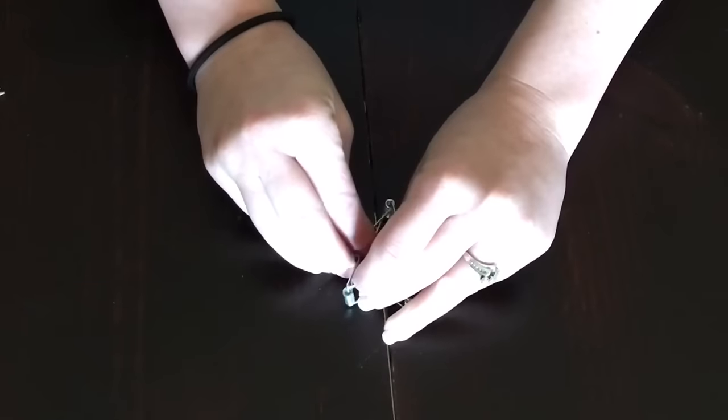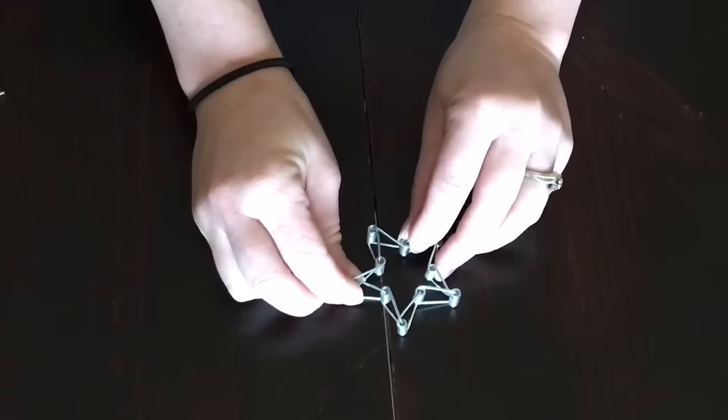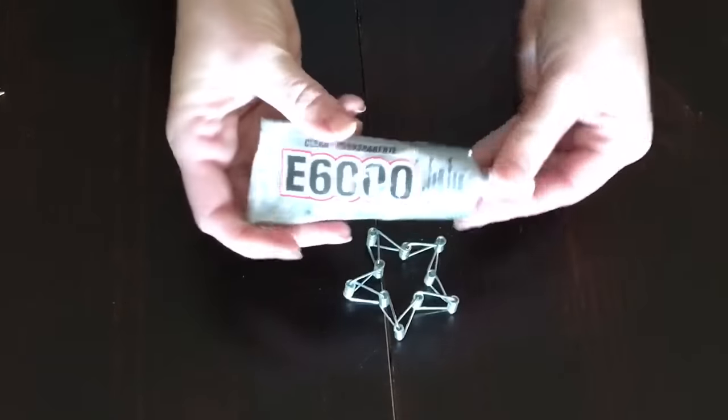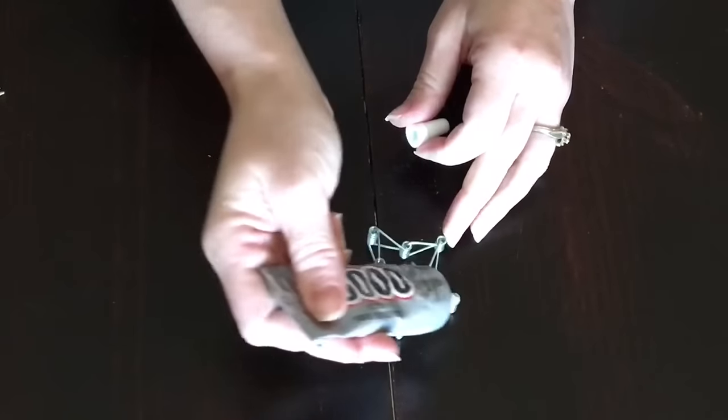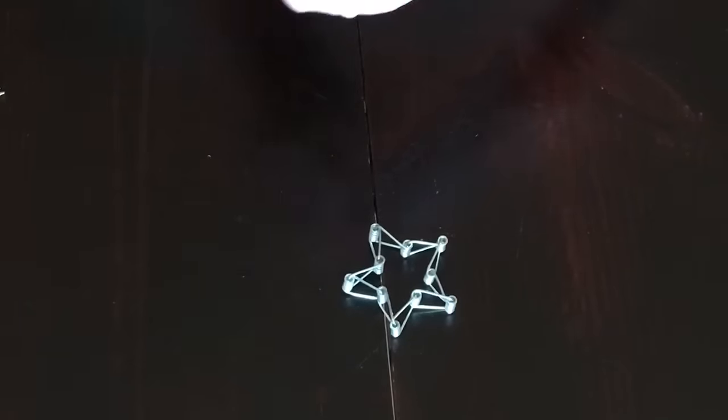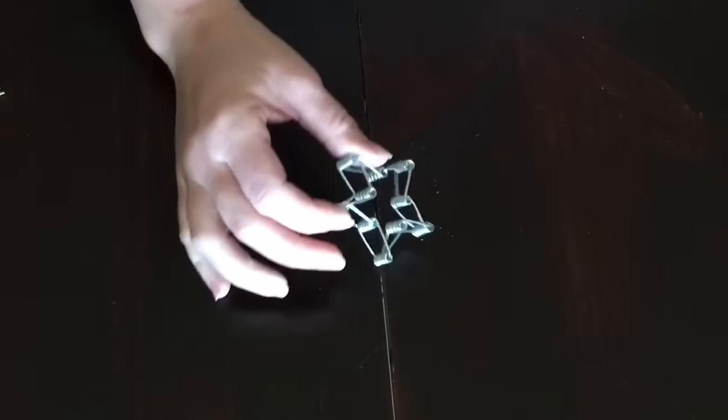What you're going to do is take just a little E6000 or any kind of metal glue. You could use your hot glue gun and just drop glue down in each one of these holes so your ornament doesn't come apart or misshapen on your tree. And then all you're going to do is once it's all glued, it's going to look like this.